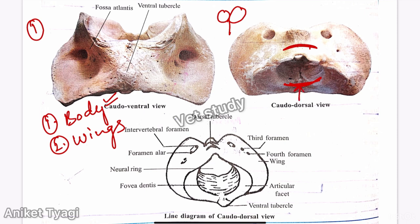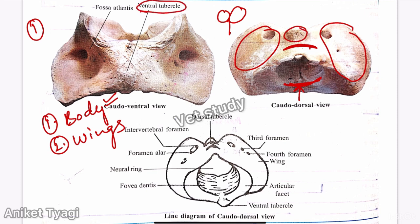The wings are bony plate-like structures projected from either side of the neural ring. The supra-spinous process as well as the ventral spine are in the form of tubercles — a ventral tubercle and a dorsal tubercle — and they are not very prominent.